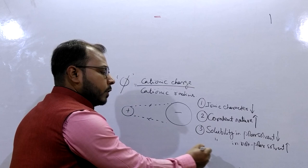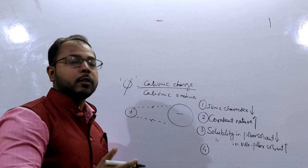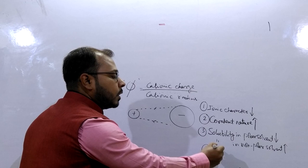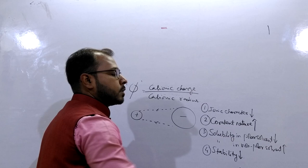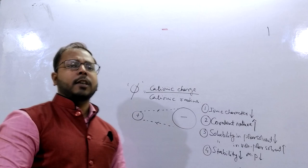Obviously we know that ionic compounds are more stable than covalent compounds. So as phi increases, ionic nature decreases so their stability also decreases. Melting point decreases.